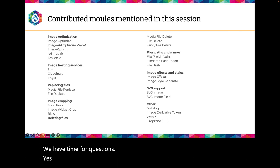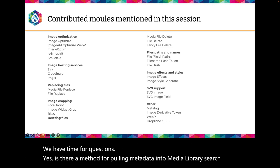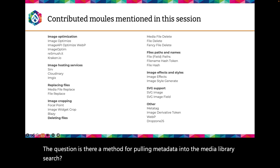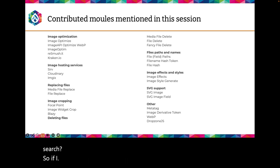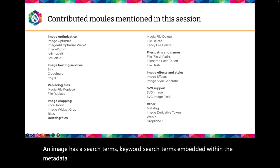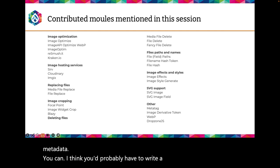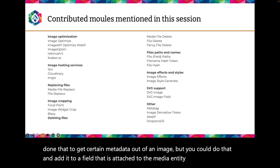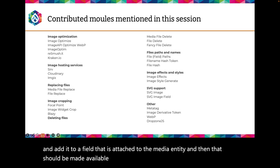Question: Is there a method for pulling metadata into media library search — for example, if an image has keyword search terms embedded in the metadata, can you access that? Answer: You can, but you'd probably have to write a custom module to do it. You could extract certain metadata from an image and add it to a field attached to the media entity, and then that field should be available in the media library search.